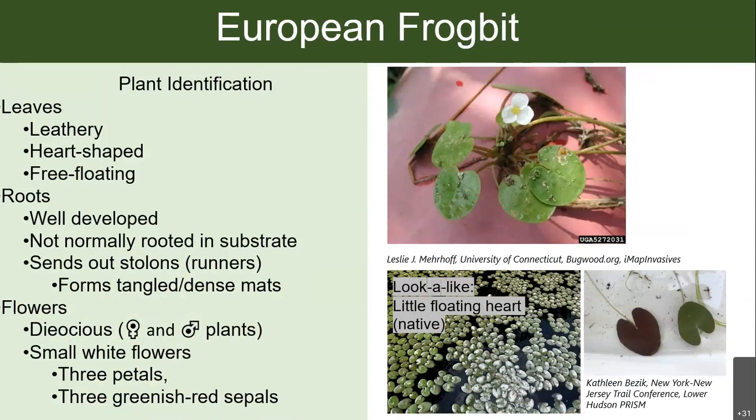The plant is dioecious, so it has both male and female flowers on different plants. But most of our populations in New York, at least the ones we're aware of, are actually only containing one sex, so seed production is pretty unlikely. The flowers are small and white with three petals, and they also have these greenish-red sepals which form around the flower.